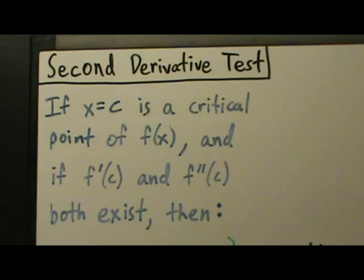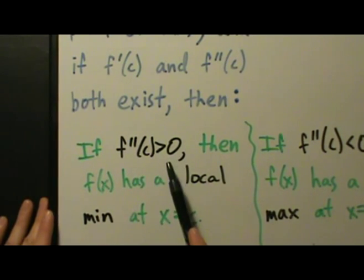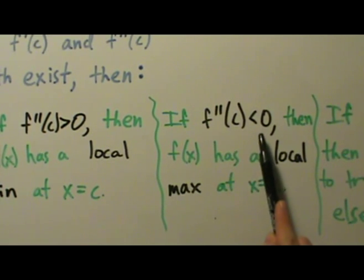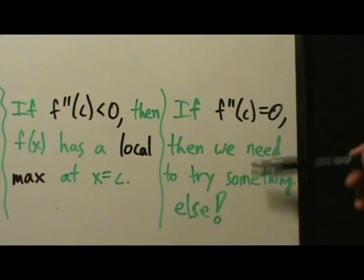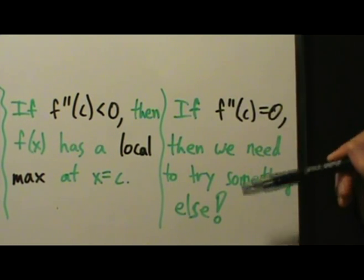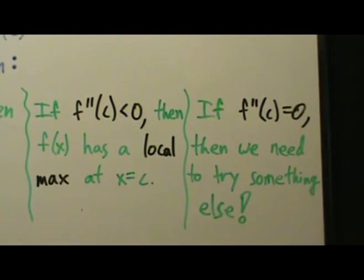Now let's look at these cases. If the second derivative at x equals c is positive, then f of x has a local min at x equals c. If f double prime of c is negative, then f of x has a local max at x equals c. And the third case: if f double prime of c is exactly zero, then we have to try something else — f of x might have a local min, it might have a local max, or it might have neither. We just don't know, and there's no way to tell using the second derivative test, so a good thing to try would be the first derivative test.